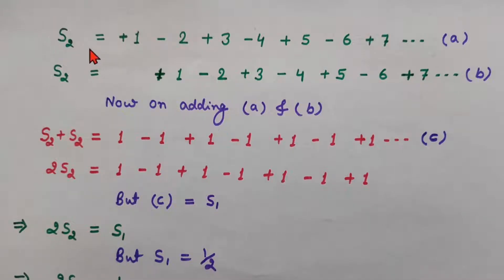Now we are taking another series, S2 series. Here it is 1, 2, 3, 4, 5, 6, 7. These are all natural numbers up to infinity, but have alternate plus and minus signs. So I have called this as series A.